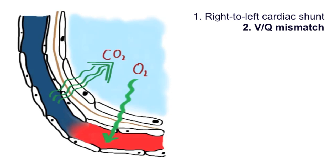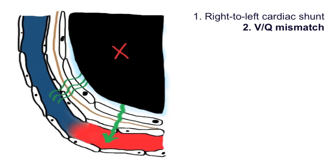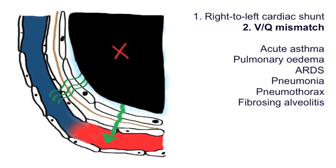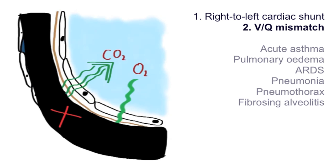This VQ mismatch can occur in two ways. Firstly, it may occur when alveoli have an adequate supply of blood for gas exchange but not much air getting into those alveoli. Examples include acute asthma, pulmonary edema, adult respiratory distress syndrome, pneumonia, pneumothorax, and fibrosing alveolitis, to name but a few. Secondly, the mismatch can occur when alveoli are adequately ventilated but are not perfused properly — for example, in a pulmonary embolism.